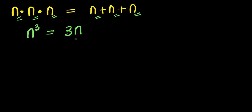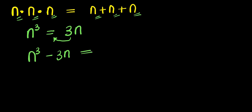The second step will be for us to move this 3n across the equality sign. It will change to negative 3n because it's positive already, and we equate it to zero. We have n³ minus 3n equals zero.